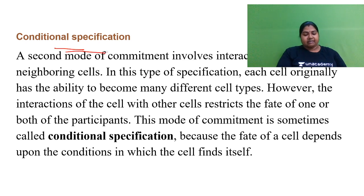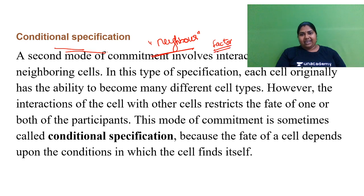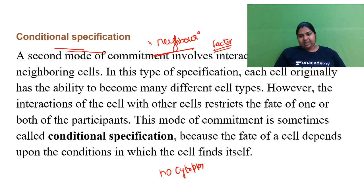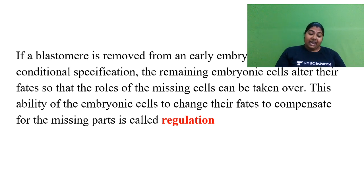Now let's look at conditional specification. Here the cell listens to the neighbor — it does not have any intrinsic cytoplasmic factor, but trusts the neighbor to determine its fate. There are no specific cytoplasmic factors within; only the neighbor dictates what will happen. That is why it is called conditional specification — the fate is reported by the other cell, not by itself.